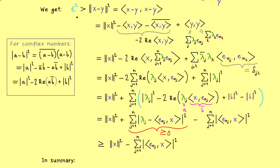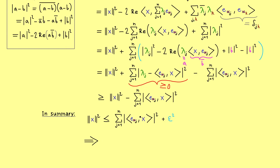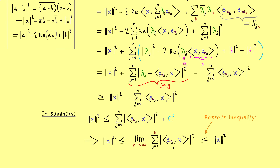The norm of x squared is bounded by epsilon squared plus this sum. For any given epsilon we find an index n such that this inequality holds. Hence we can make epsilon as small as we want, and in the limit as n → ∞, the limit cannot be smaller than the norm of x squared. This is the opposite direction from Bessel's inequality, which claims the limit must be less than or equal to the norm of x squared. Hence we have equality — Parseval's identity is shown.